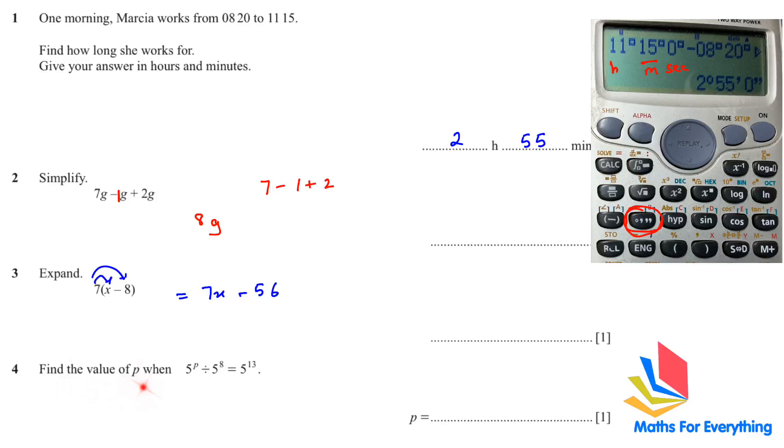Question number 4. Find the value of p when 5 to the power of p divided by 5 to the power of 8 is equal to 5 to the power of 13. As you can see, all the bases are the same: 5, 5, and 5. If there is a divide here in questions of indices or exponents, it means we will minus the power. So 5 to the power of p minus 8 is equal to 5 to the power of 13. If it is a divide here, we minus the power. If it is a multiply, we add the power. And as the bases are same, they get cancelled. So what are we left with? p minus 8 is equal to 13. This 8, when we move to the other side, it will be positive. So 13 plus 8, 21. So p is equal to 21.